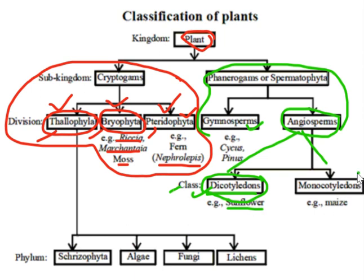Monocotyledons — plants belonging to this group bear seeds having only one cotyledon, the leaves have parallel venation, and the root system is fibrous. For example, maize, rice, grass, etc. So this is about the plant kingdom or Plantae kingdom classification. The main common features of all plants are multicellular, eukaryotic, and autotrophic — they all have chlorophyll and make their own food by photosynthesis. Hope you understand and like the video, thank you.